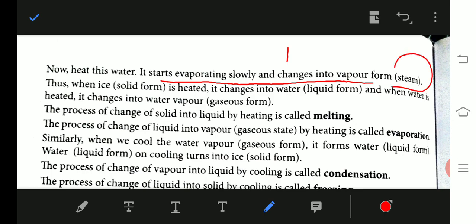Thus, when ice is heated, it changes into water and when water is heated, it changes into water vapor. The process of change of solid into liquid by heating is called melting. Solid changing to liquid is called melting. And next, the process of change of liquid into vapor by heating is called evaporation.